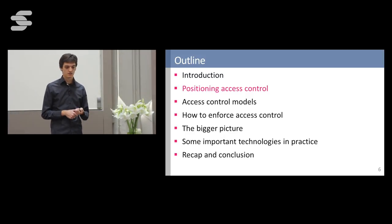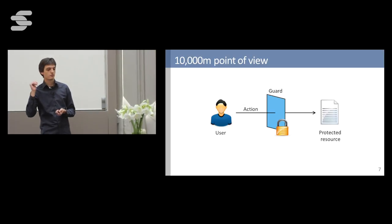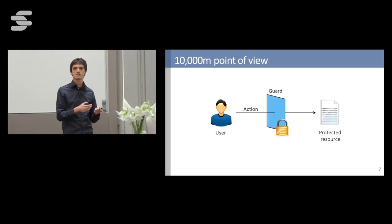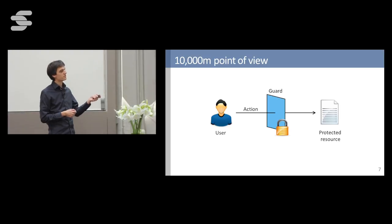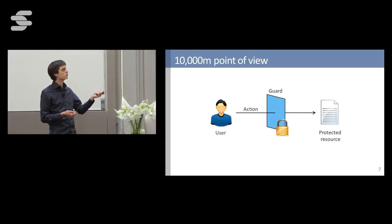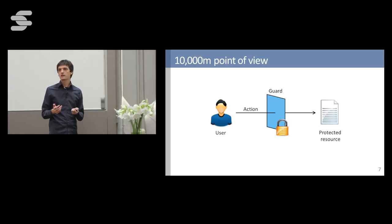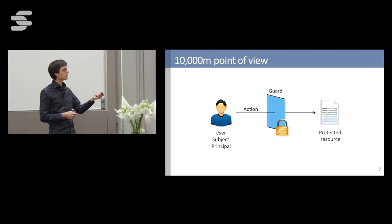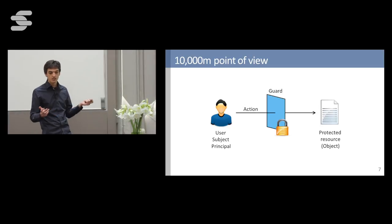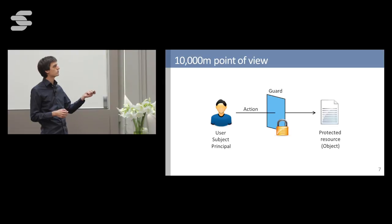From a very high-level point of view, access control is often depicted with this picture: you have a user performing a certain action on a system with protected resources, and in between there is a guard that performs access control. In terminology, we don't just talk about users — it can also be a remote service, a machine, or a program acting on behalf of a user. We call these subjects or principals. Resources are also often called objects, but the two terms are synonyms. I will use the terms 'subject' and 'resource.'